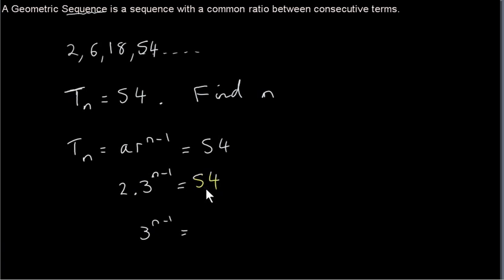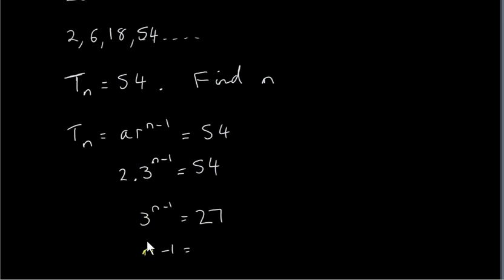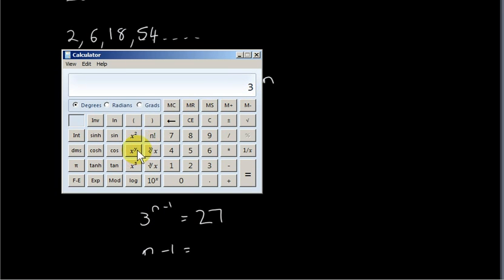Of course, we know the answer is 4, because we just did this earlier. We know that T4 is 54, but let's see how to do it, how to solve this equation. The first thing you would do is divide across by A, divide across by 2. So we have 54 divided by 2, which is 27. And then what you would do is just go to your calculator and take successive powers of 3 until we get to 27. We can also solve this using logs, but I don't want to go into logs in this video. What I want to do is just show you how to work it out using a calculator.